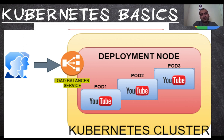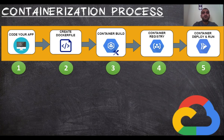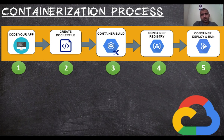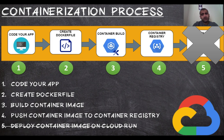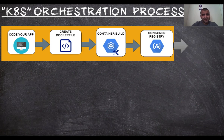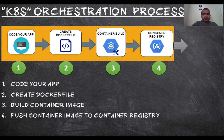In our last lesson we created a containerized application following five steps: we coded our application in Python (hello YouTube), created a Dockerfile, used Cloud Build to create the container image, pushed that image to Container Registry, and deployed it on Google Cloud Run as a standalone container. This time we will not follow step 5. Instead of running it on Cloud Run, we will deploy it on Kubernetes Engine, so steps 1 to 4 remain the same.